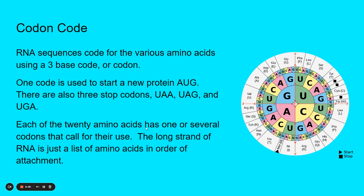Each of the 20 amino acids has one or several codons that call for their use. So this long strand of RNA is just a list of the amino acids in order of attachment. If you were reading the RNA, it would start with the start codon AUG — so we start here. Then the next one might say AAA, so that means we put a lysine there. Then GCU — that's an alanine. UCC — that's a serine. And it continues until the RNA has a stop codon, like UGA, and then the whole mechanism knows it's time to stop.